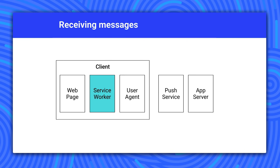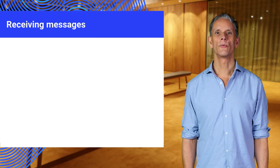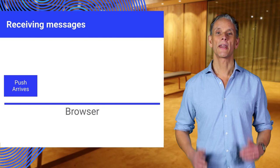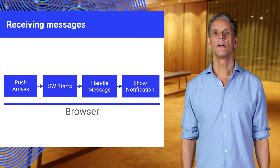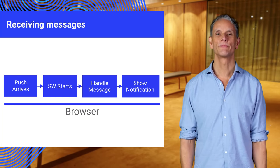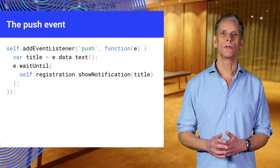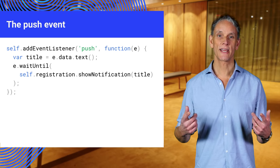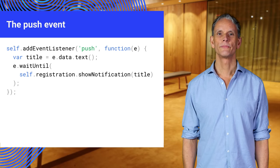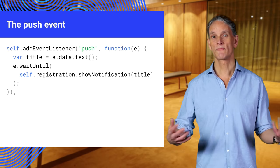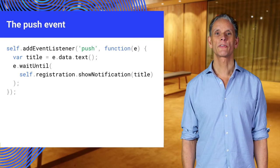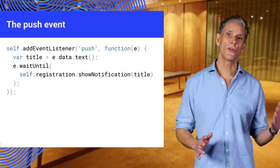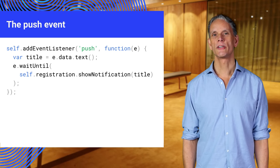Now let's look at messages from the receiving end in the web app on the client. Handling push events happens in the service worker. The service worker will be woken up to handle incoming push messages when a push event is fired, allowing your app to react — for example by displaying a notification using service worker registration showNotification. To display a push notification, you listen for the push event in the service worker and get the push message data from the push event object — in this example, simply converting the message data to text. We wrap showNotification in a waitUntil to extend the lifetime of the push event until the showNotification promise resolves. The push event will not be reported as successfully completed until the notification has displayed.